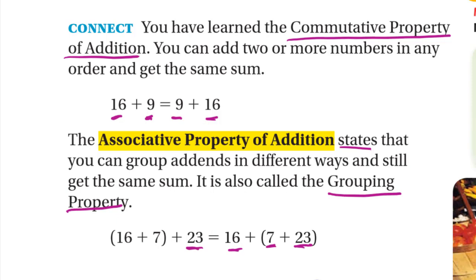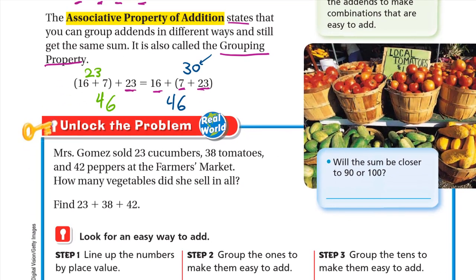You choose the two numbers that are easier for you to start with, then add the third. Adding 16 plus 7 gives 23, and 23 plus 23 equals 46. On the other side, 7 plus 23 is 30, and 16 plus 30 is also 46. In this lesson we'll try to add numbers to get zero in the ones place to make addition easier.